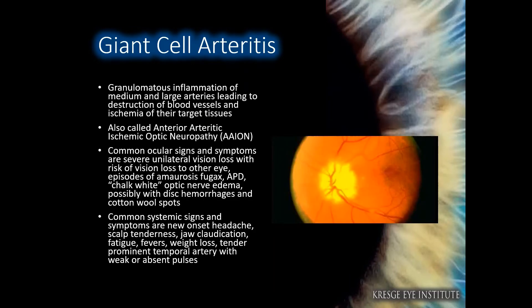Giant cell arteritis, or GCA, is an optic neuropathy caused by granulomatous inflammation of blood vessels leading to their destruction and ischemia of the target tissues. This is also called Anterior Arteritic Ischemic Optic Neuropathy, or AAION.